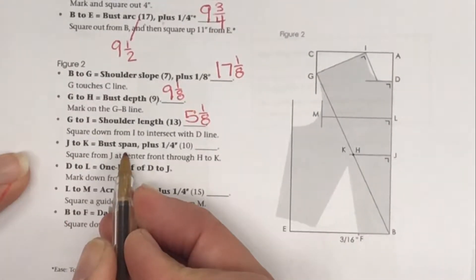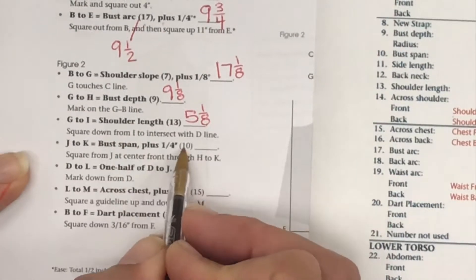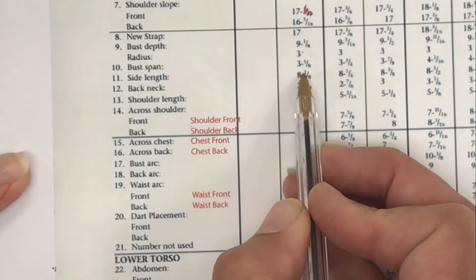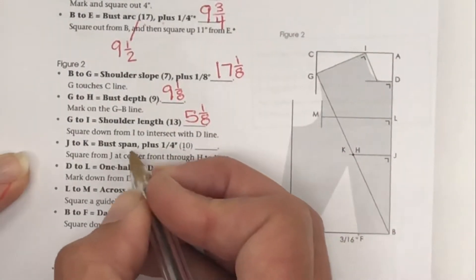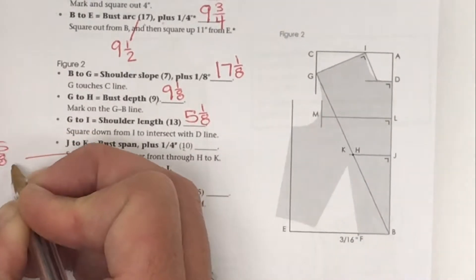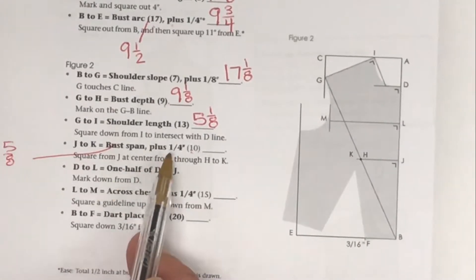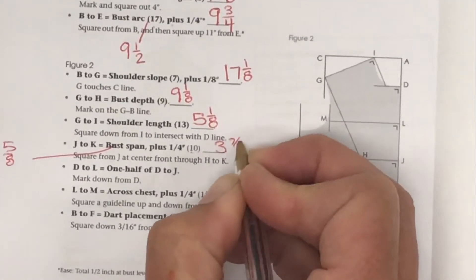Our bust span, got math plus 1/4. Our bust span, which is number 10, looks like it's 3 and 5/8 for my size. I'm just going to write that: 3 and 5/8. But they want us to do math, they want us to add 1/4. 1/4 is the same as 2/8. 2/8 plus 5/8 is 7/8, so this will be 3 and 7/8.